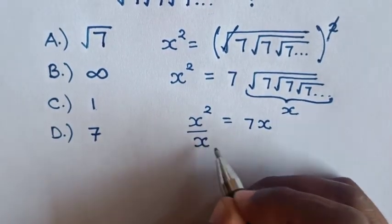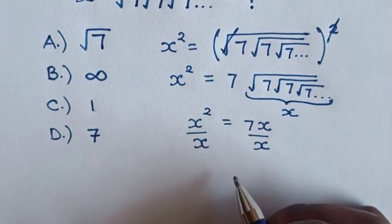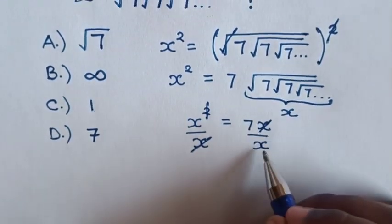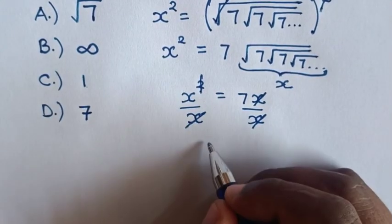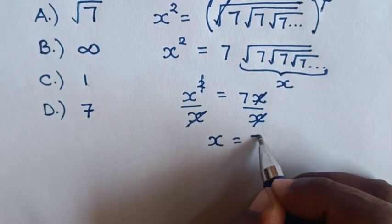Then we divide by x on both sides. To simplify, x squared will cancel with x, and this x will cancel with x. Then x equals 7.